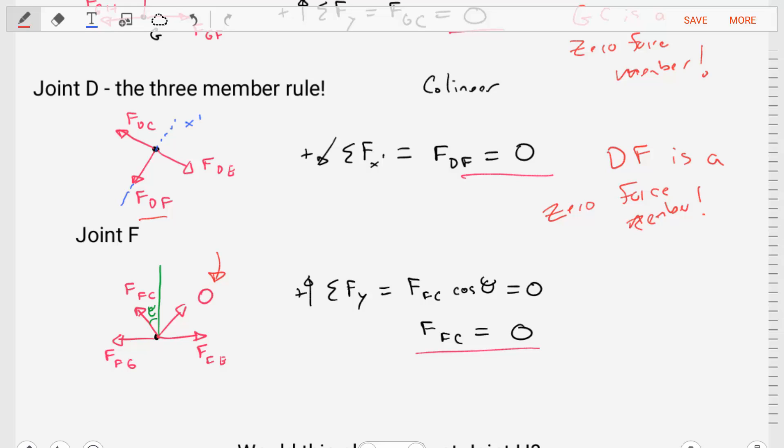Now at this joint, since that DF is zero, this joint becomes, in essence, a three-member joint. And in these three members, two of them are collinear, equal and opposite to each other. And that would require that the force in FC is equal to zero, so member FC is a zero force member.